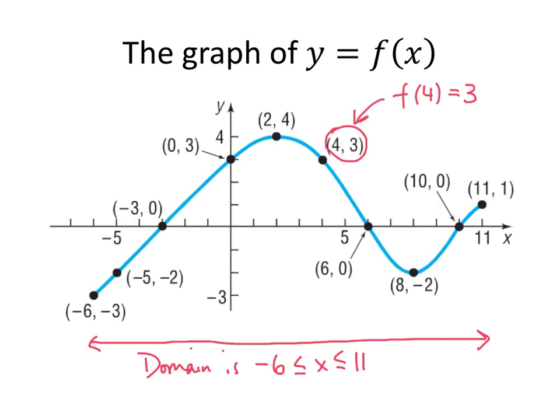The range of our function is the set of all possible y values that we can get out of our function. And again, we can see that is going to be from negative 3 all the way up to positive 4.